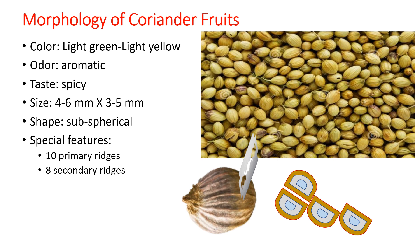Regarding the microscopy of this fruit: the fruit has to be soaked overnight in water so that the tissue becomes soft, and then it can be cut transversely to obtain transverse sections. These fruits are dicot-type, so there are chances you may get two semicircles. A single semicircle is enough for us to understand the inner anatomy or anatomical architecture of the fruit.